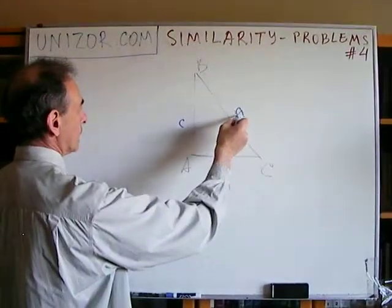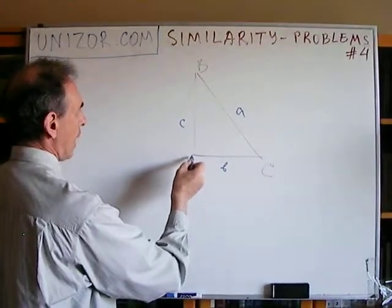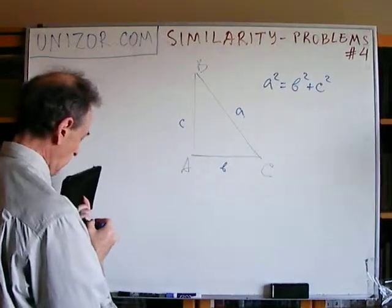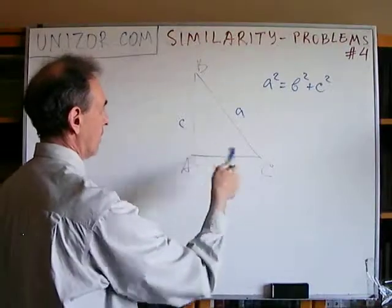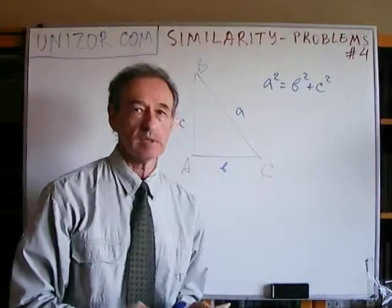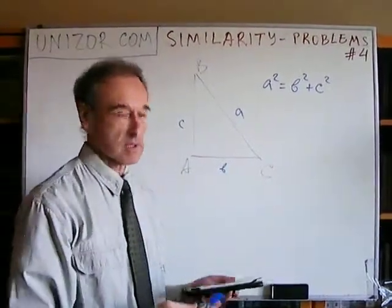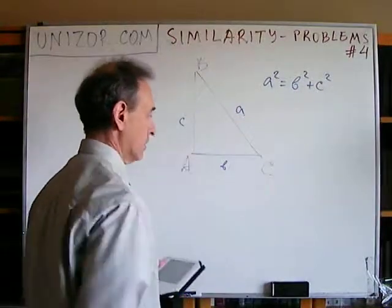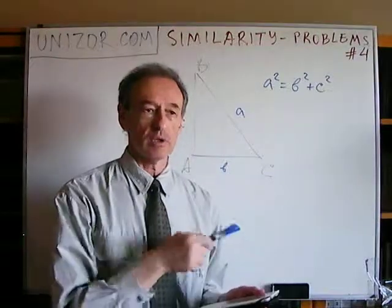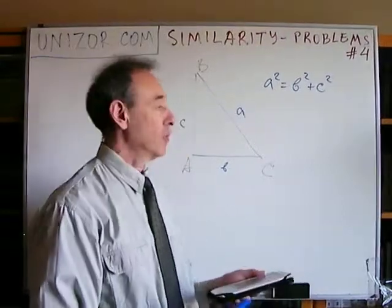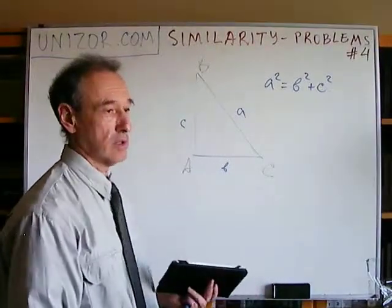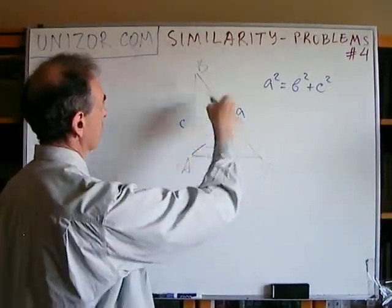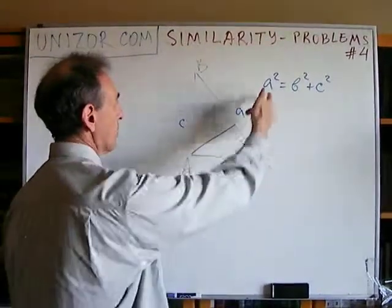Notice that I'm using lowercase letters for the sides, the same as uppercase for the opposite vertex. So the Pythagorean theorem is: A squared equals B squared plus C squared. A, B, and C are the sides — when I write something like this, I actually mean the lengths of the corresponding sides. If you take the length of the hypotenuse A and square it, it equals the sum of squares of the two legs. The proof was in one of the prior lectures; it uses the similarity of three triangles formed by the altitude — the small one is similar to the bigger one and similar to the biggest one.